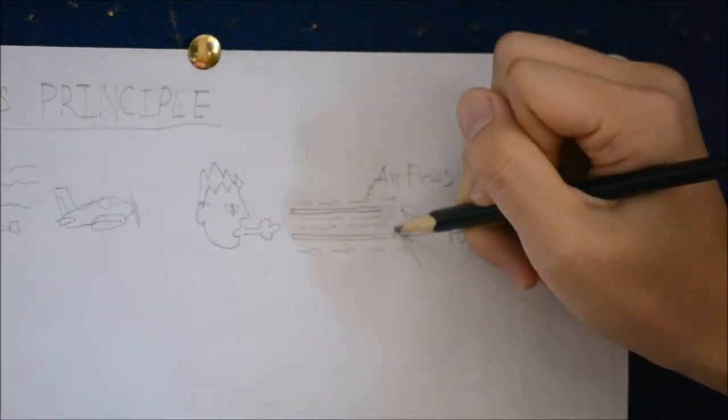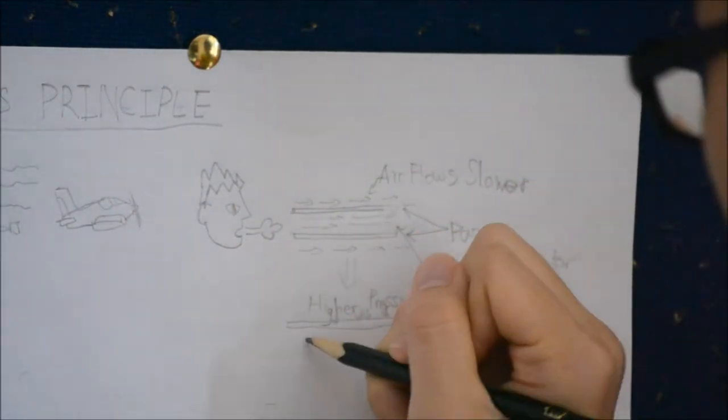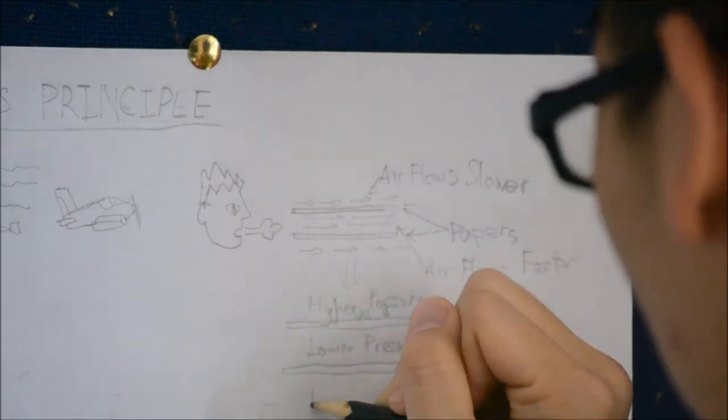This causes the high pressure air on the outside to push on the paper and make them come together, as air always travels from a region of high pressure to a region of low pressure.